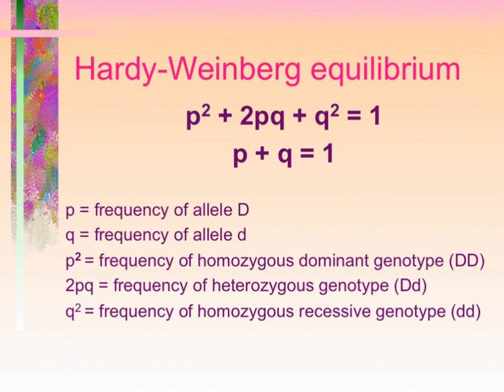q² is the frequency of the homozygous recessive genotype (dd). When you look at the Hardy-Weinberg equilibrium equation — p² + 2pq + q² = 1 — it means that of all the genotypic combinations in a population at gene D, we will have some homozygous dominant, some homozygous recessive, and some heterozygous. When added together they equal 100% of the population's genotype at gene D.